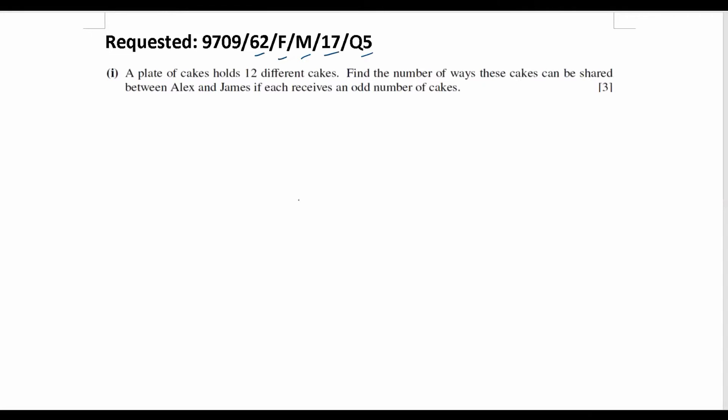So first thing, the number of cakes can be shared. So from this sentence given here, it does not involve arrangement. So we know it's going to do with selections. And then each receive an odd number of cakes is telling you the restrictions.